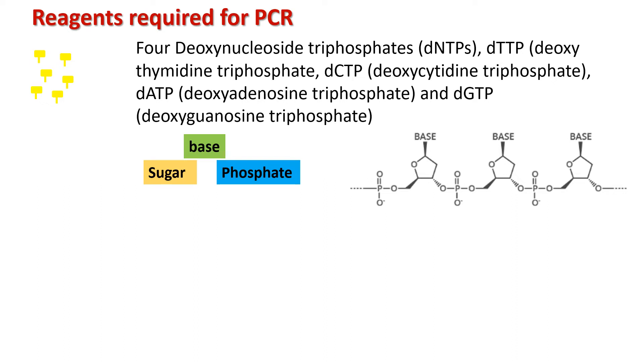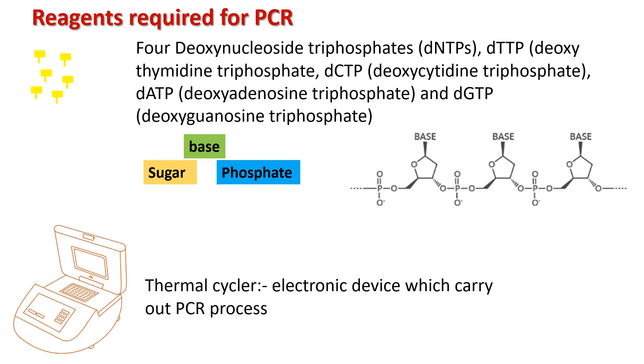The last thing required for PCR reaction is a thermal cycler. This is the electronic device which is programmed to carry out PCR reaction. This device has a thermal block with holes where tubes holding the PCR reaction mixture can be inserted. Why is it called a thermal cycler? Because it can alter the temperature of the reaction every few minutes, which is the requirement of the PCR process.